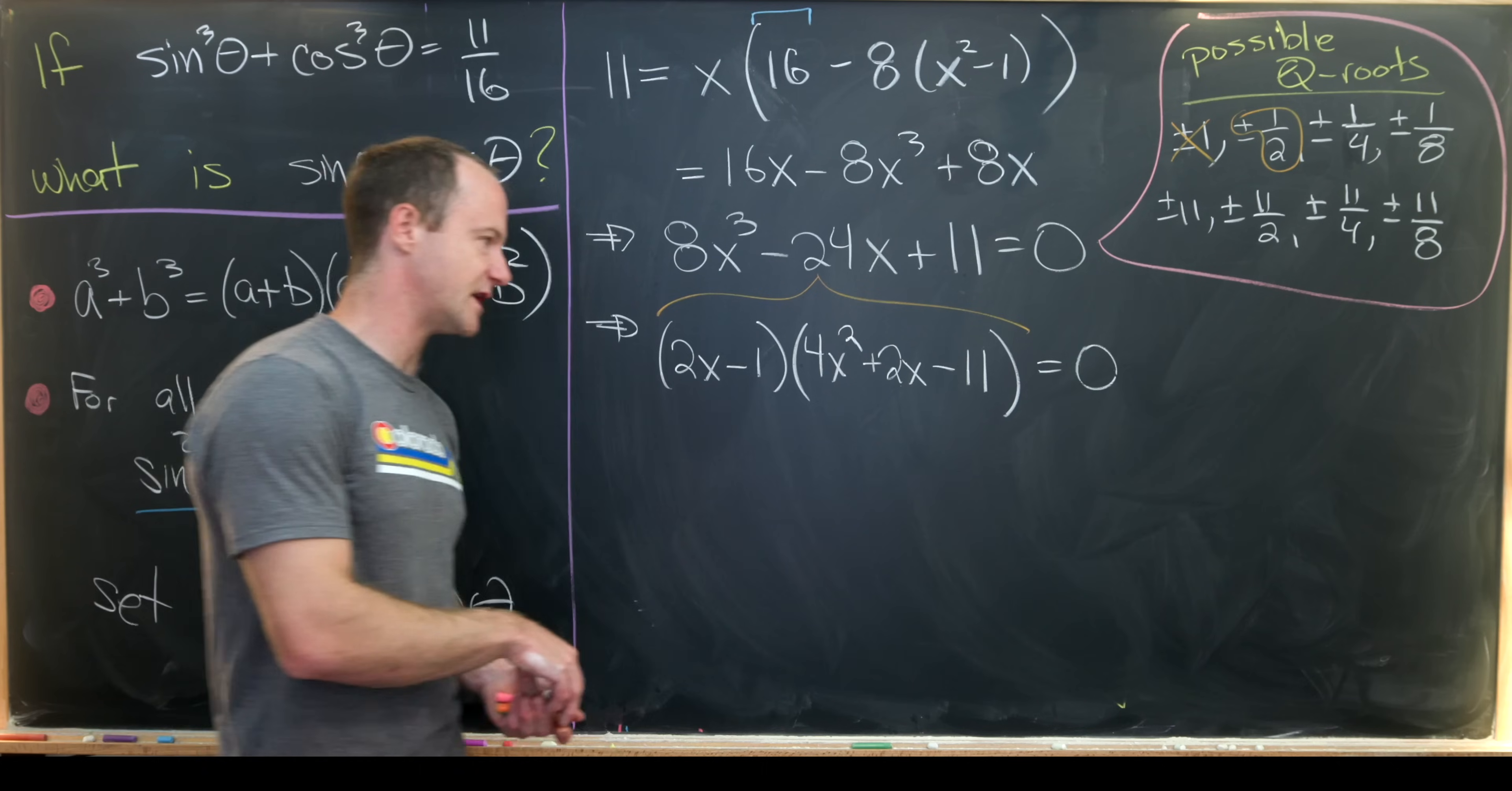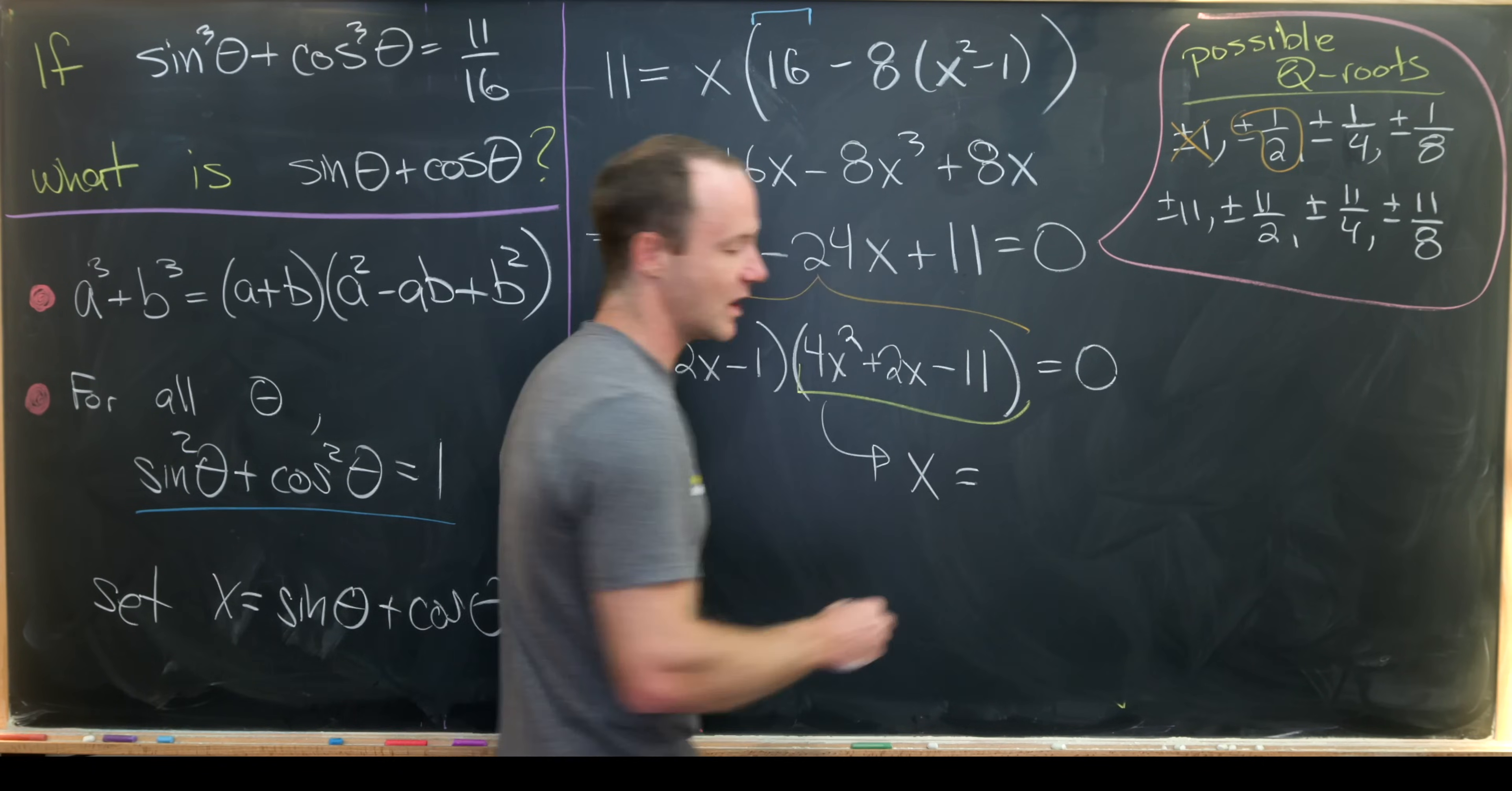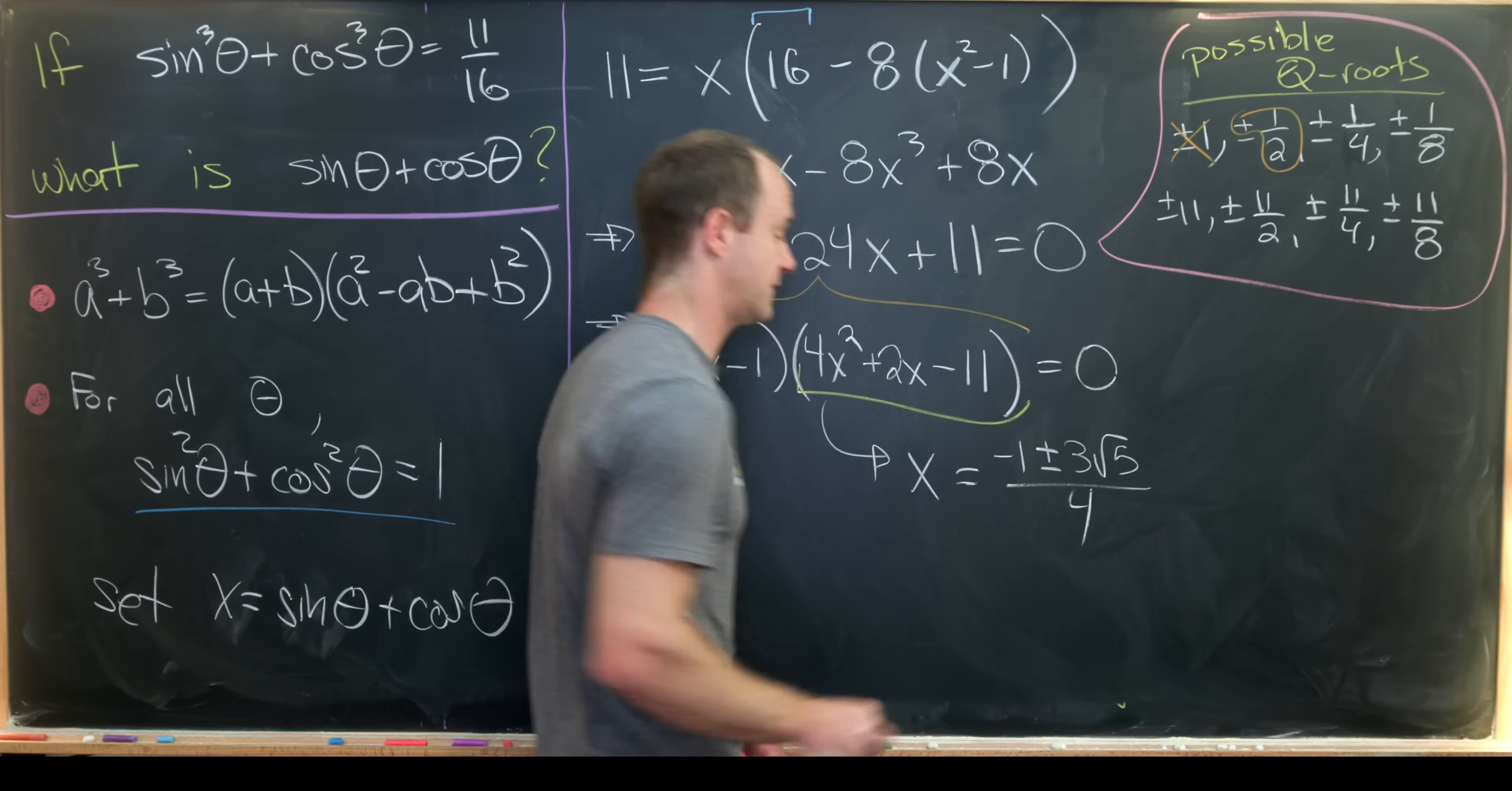And that allows us to do this kind of multiplication in order to achieve this cubic polynomial up here. And then from here, we can find roots of the remaining quadratic polynomial. But for that, we can just use the quadratic equation. And I'll let you guys check that. But what you end up with is x equals negative 1 plus minus 3 times root 5 over 4.